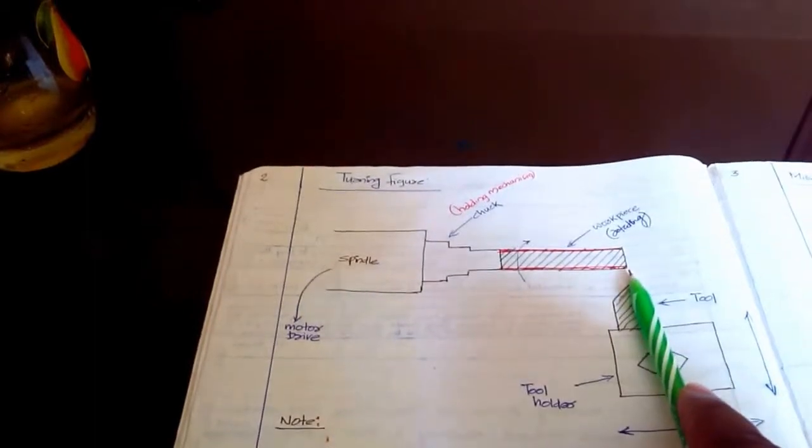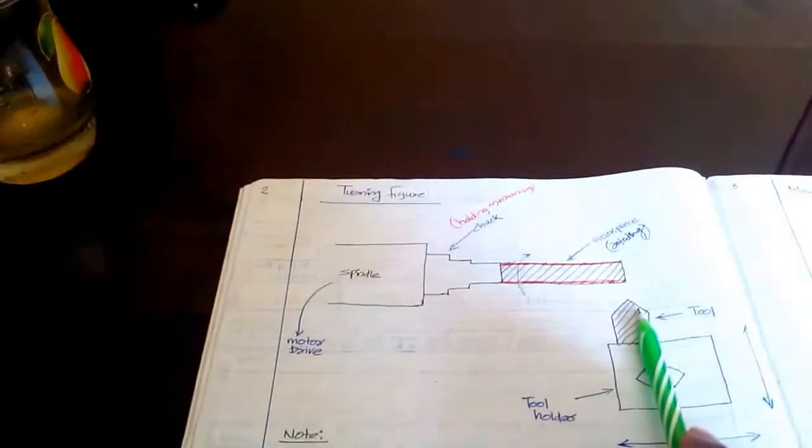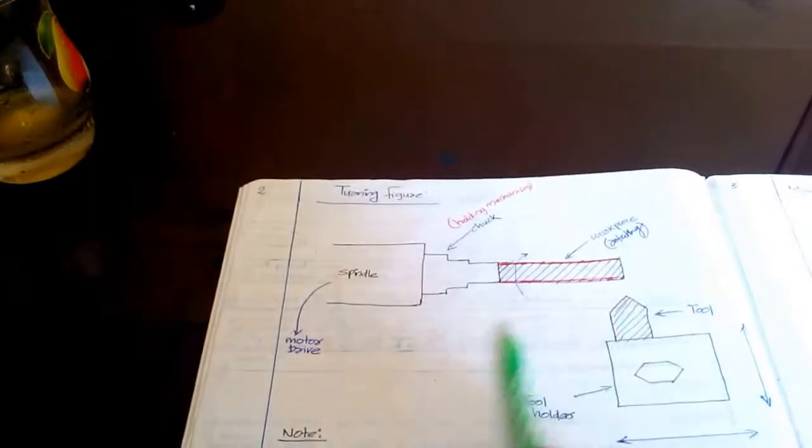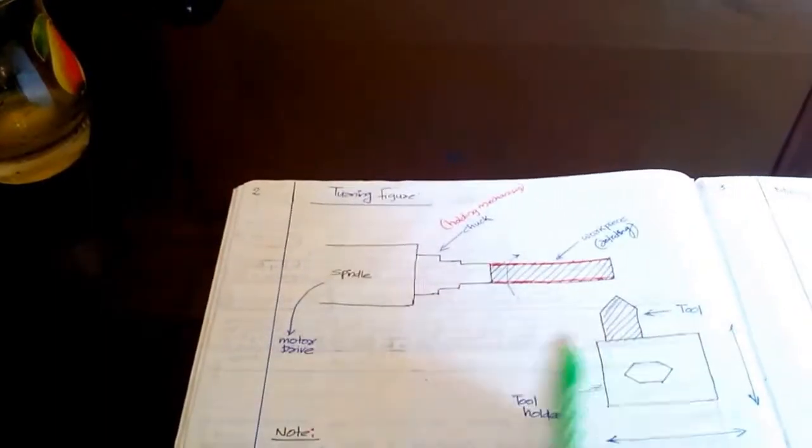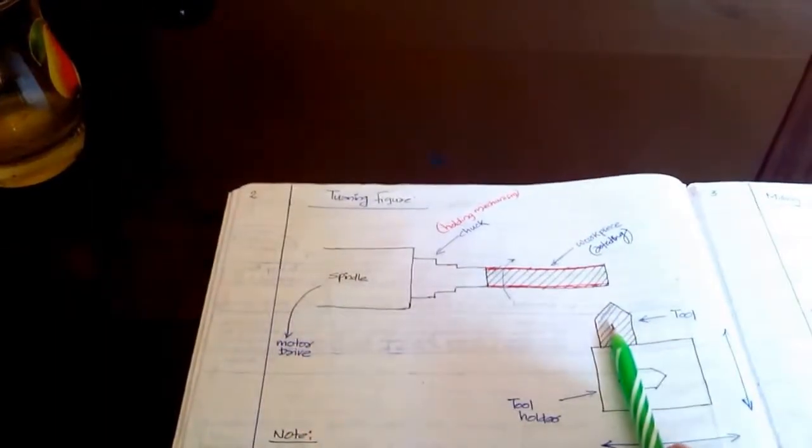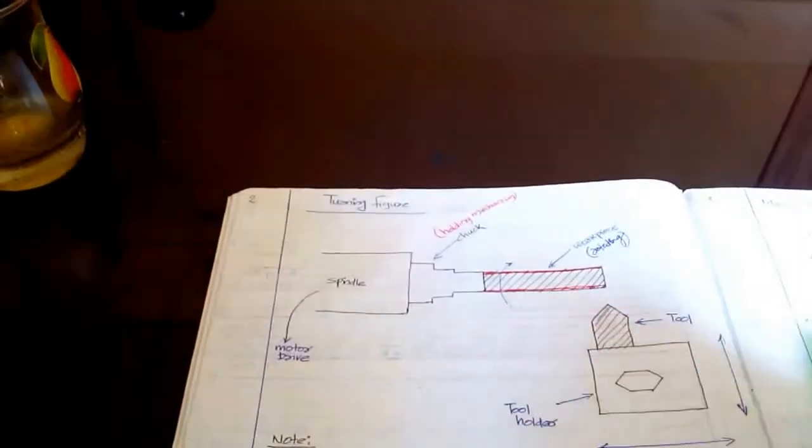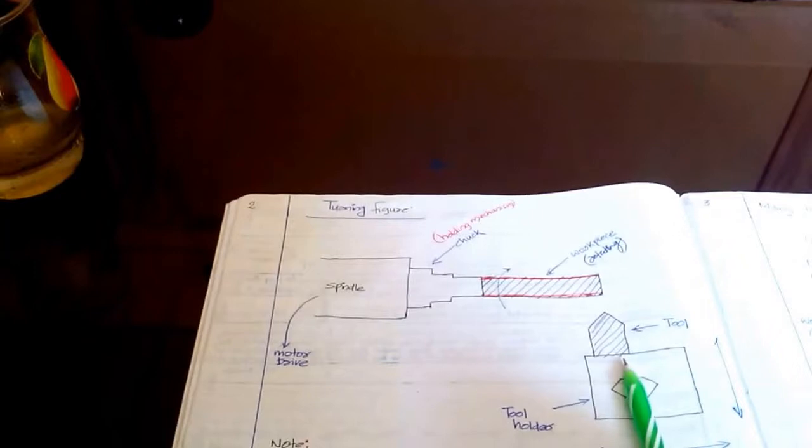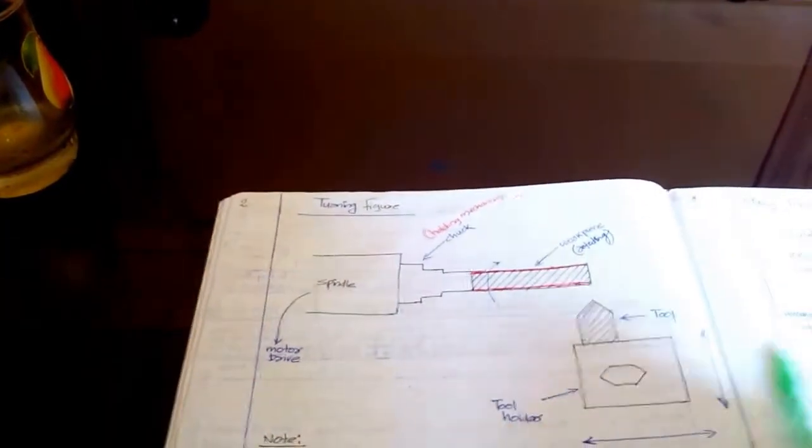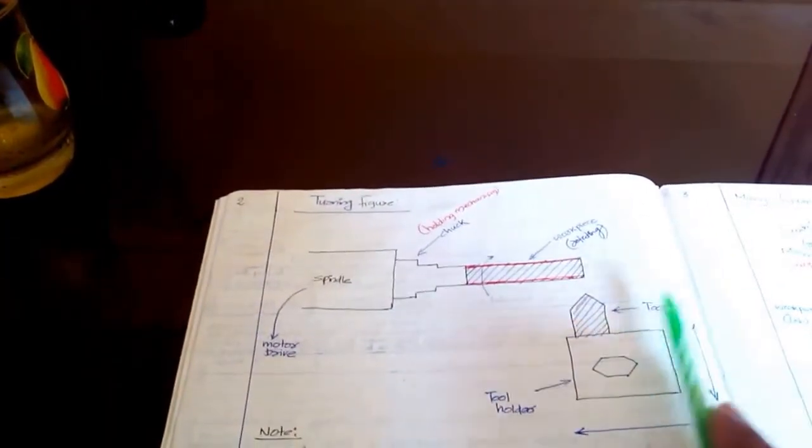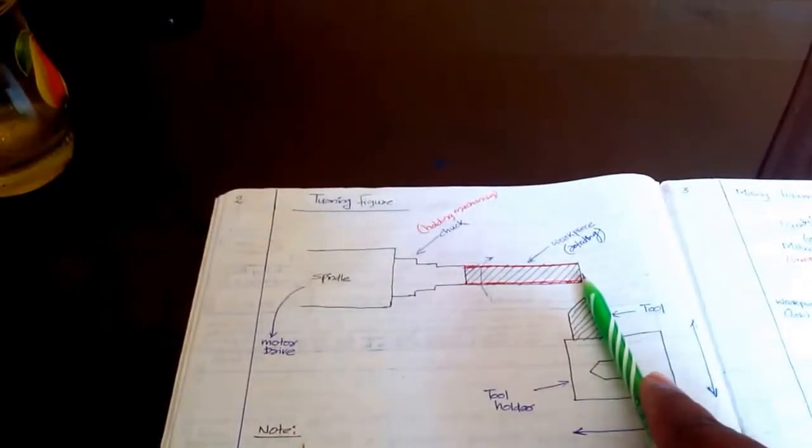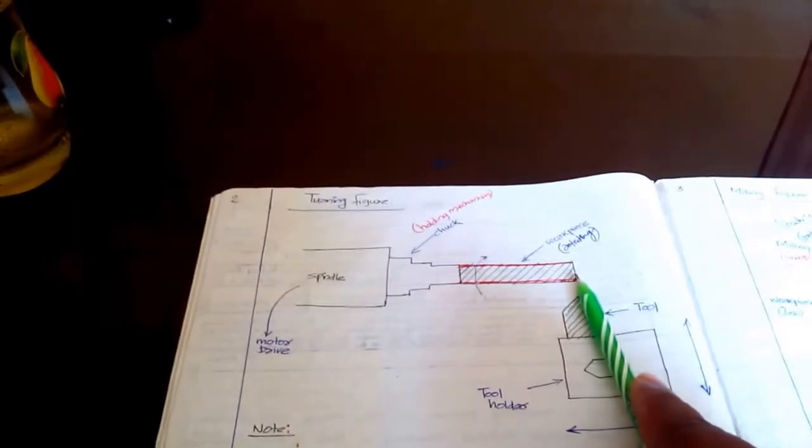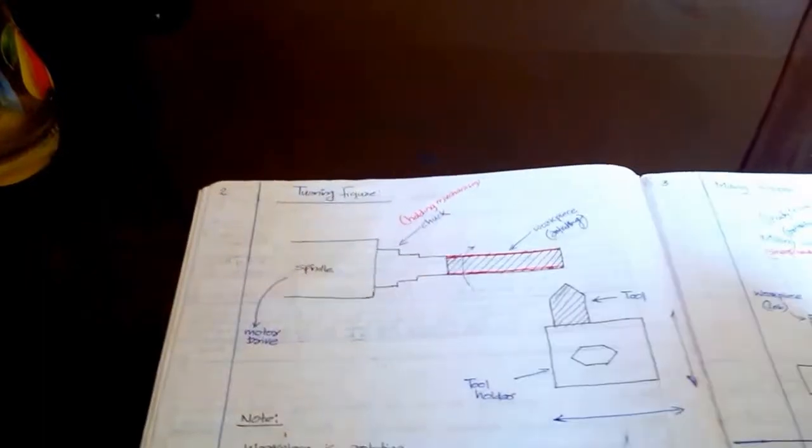If the tool is moving in the left direction, this is Z negative. If the tool moves in the right direction, this is Z positive. So this is Z negative, this is Z positive, and the surface here, the point is Z zero.